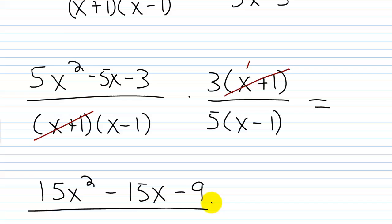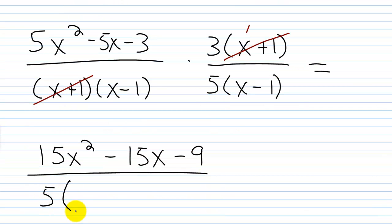And then over, basically we'll have 5 times x minus 1 times x minus 1. So you can write this as x minus 1 times x minus 1 like this. Or a lot of people just to save space will just put x minus 1 squared. Either way, it doesn't really matter.